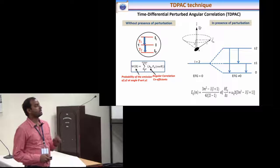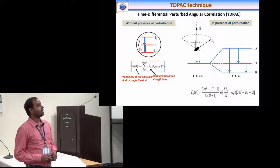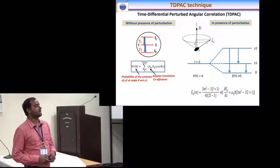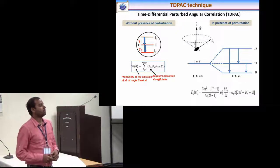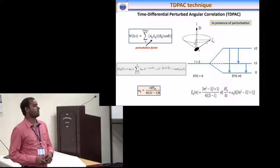If the source nuclei is placed in a suitable electric field which has a gradient, then the nuclei will start precession around the symmetry axis and the spin of the level will be split into m states. From this equation, we can explore this quadrupole frequency.